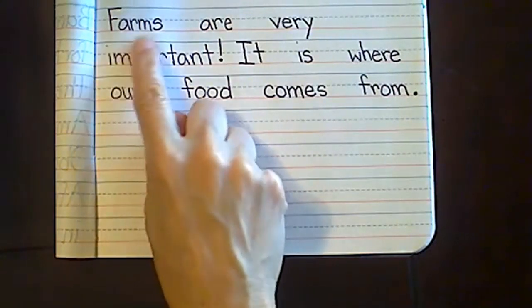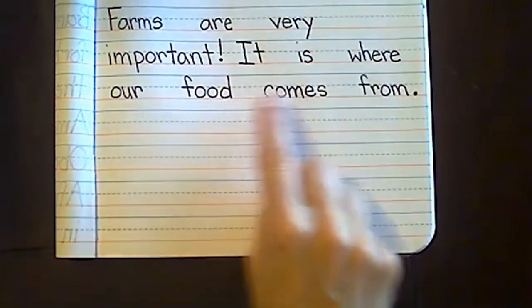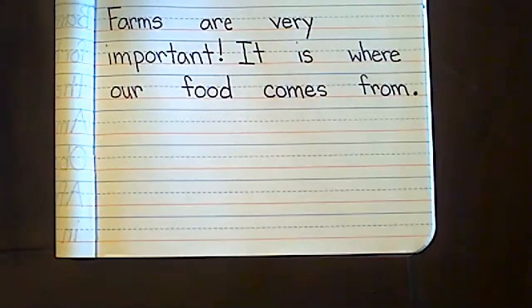Let's go back and read from the beginning: 'Farms are very important. It is where our food comes from.' Now remember, if you feel like you're falling behind, go ahead and pause so you can catch up. Now that we've told our reader why farms are so important, how does the food come from farms? The farmer is key — the farmer takes care of all the animals and crops to make sure they're healthy.